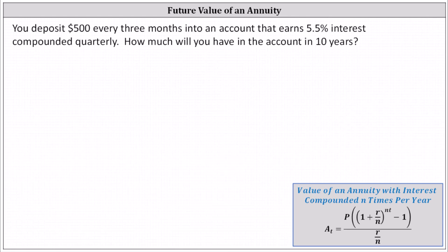You deposit $500 every three months into an account that earns 5.5% interest compounded quarterly. How much will you have in the account in 10 years?